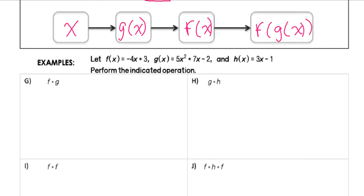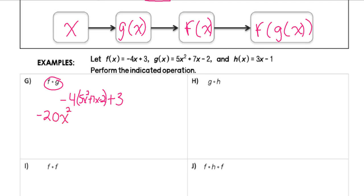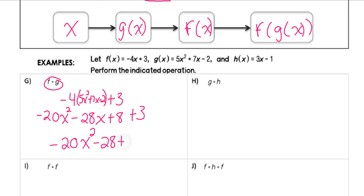Let's practice with those same three functions f, g, and h. For f(g(x)), I take g(x) and plug it into f(x). So I write f(x) = −4x + 3, but replace x with the function g: (5x² + 7x − 2). Distributing the −4 gives −20x² − 28x + 8, plus 3. Combining like terms gives −20x² − 28x + 11.